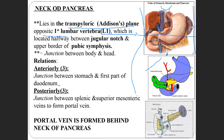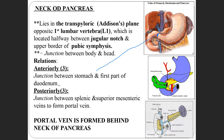The anterior relation of the neck of the pancreas is the junction between the stomach and the first part of the duodenum. Posteriorly, behind the neck, is the junction where the splenic vein and the superior mesenteric vein join to form the portal vein.